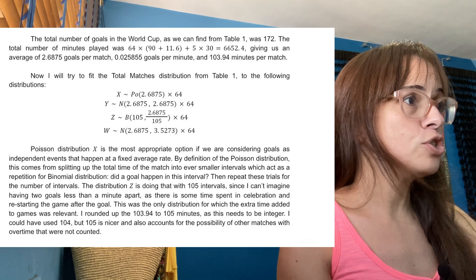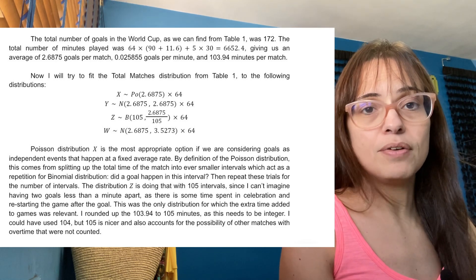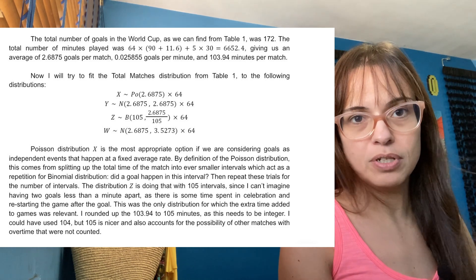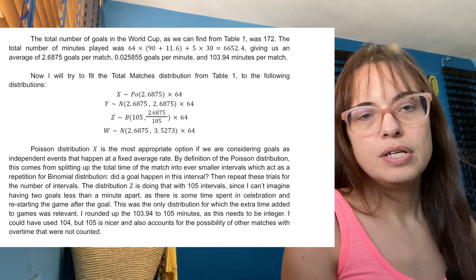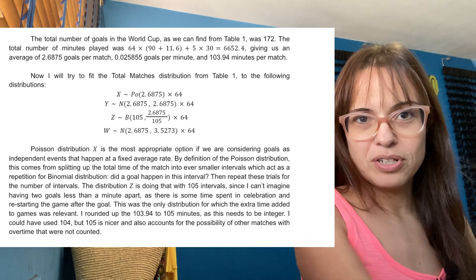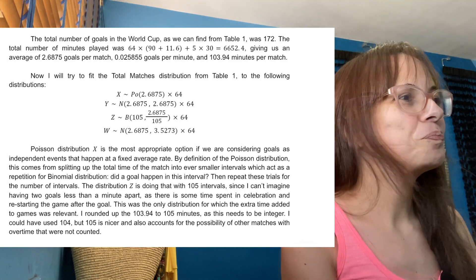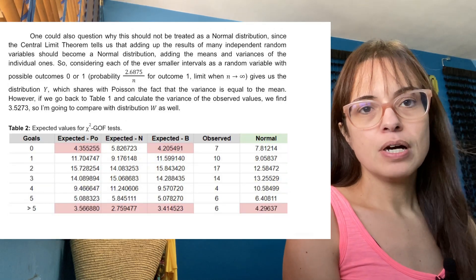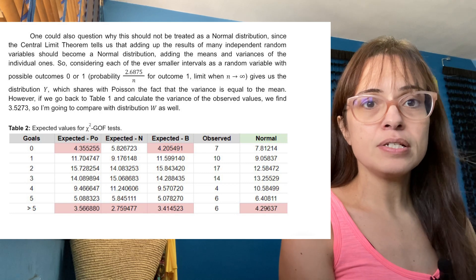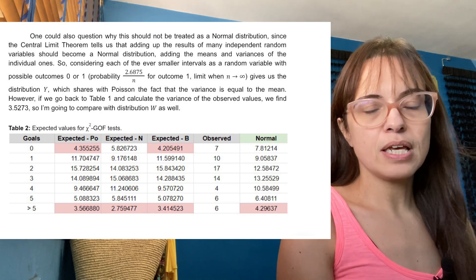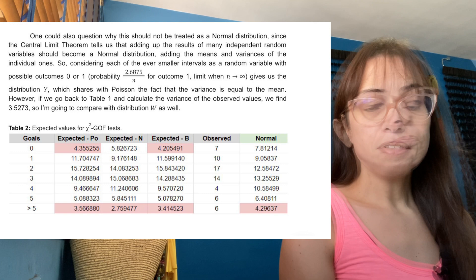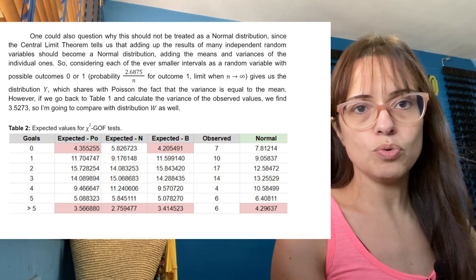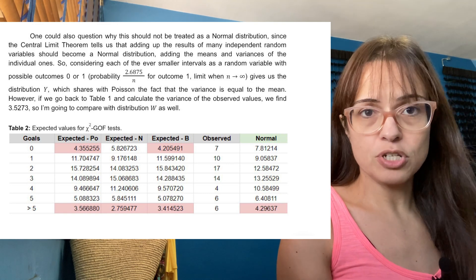The number 2.6875 is explained before I even type the distributions, which is best — it is the average number of goals per match according to the calculation I just did. That number of 3.5-something is explained in the next paragraph: it is the variance I got from the data to make the second normal distribution. This is going to be interesting when I discuss degrees of freedom for the chi-squared goodness of fit tests.